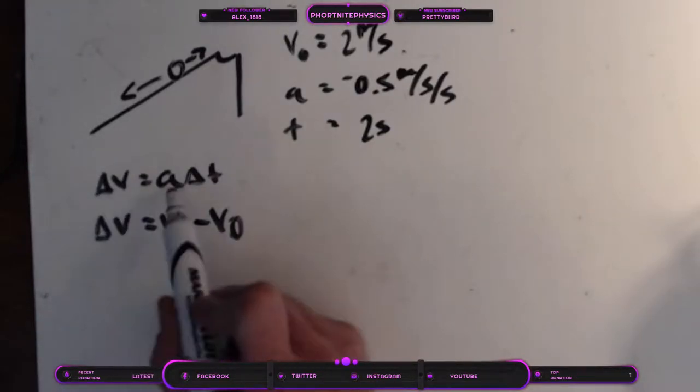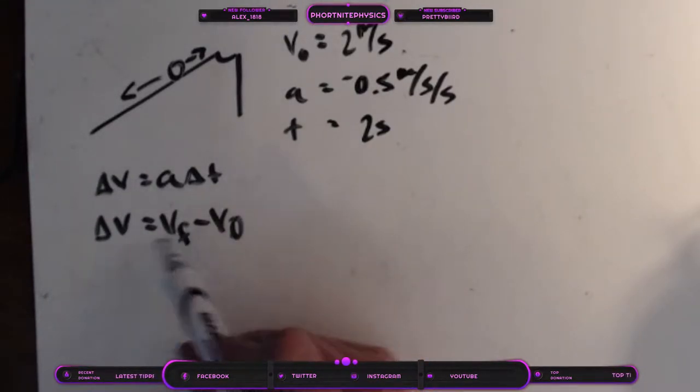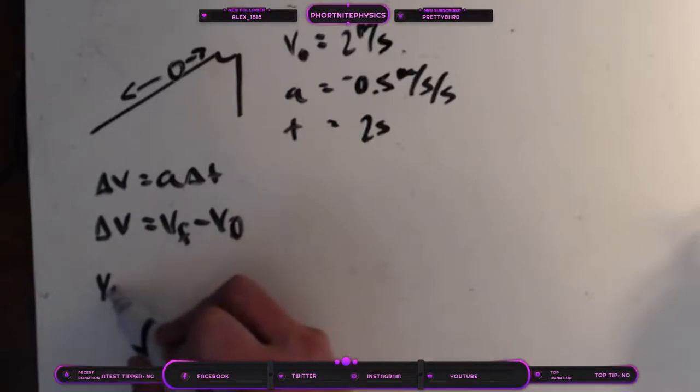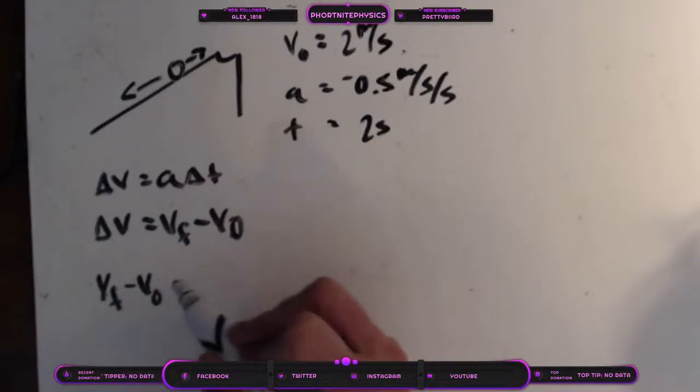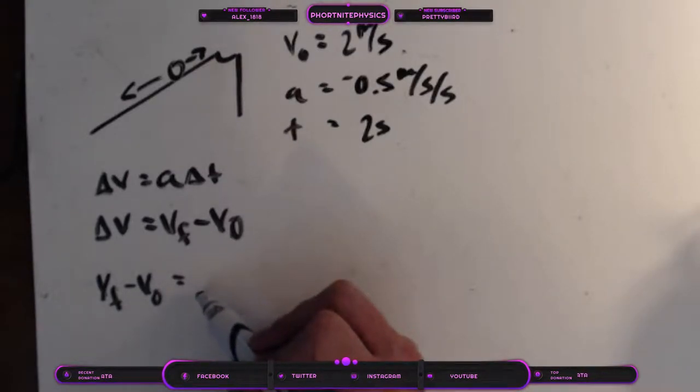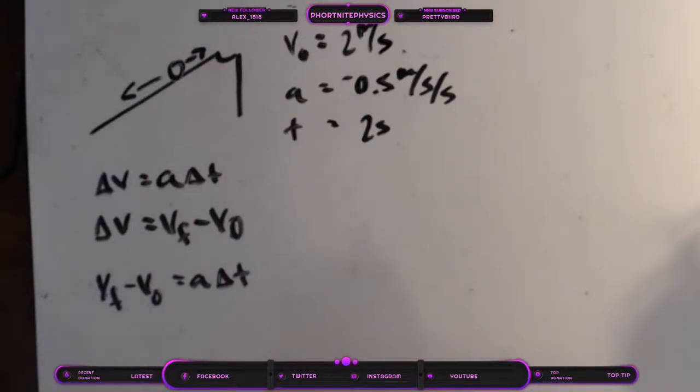So knowing that these two things both equal delta V, we can substitute this in for that. And we can rewrite our equation one last time as Vf minus the initial velocity equals our acceleration multiplied by our time: Vf - V₀ = aΔt.